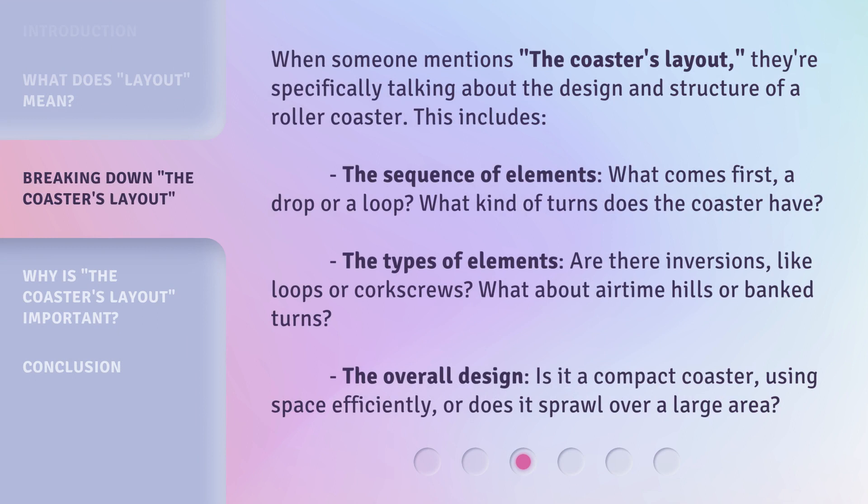When someone mentions the coaster's layout, they're specifically talking about the design and structure of a roller coaster. This includes the sequence of elements — what comes first, a drop or a loop? What kind of turns does the coaster have? The types of elements: are there inversions, like loops or corkscrews? What about airtime hills or banked turns?